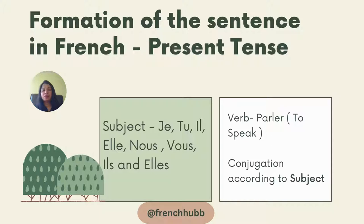Formation of the sentence in French. We are doing this in present form. As we know, the subject pronouns are: je, which means I; tu, which is you informally; il, which means he; elle, she; nous, we; vous, which means you in a formal manner; ils pluriel, that is they (masculine); elles pluriel, that is they (feminine). We use these subjects to make a sentence in French in the present tense.